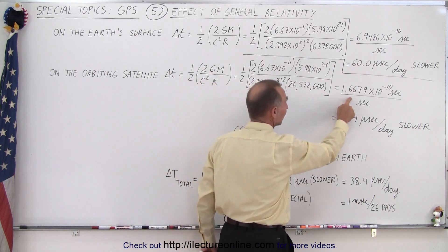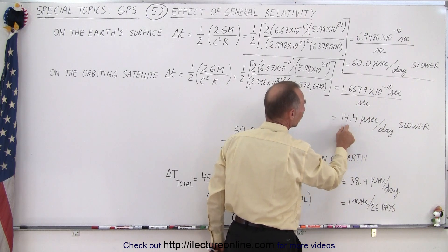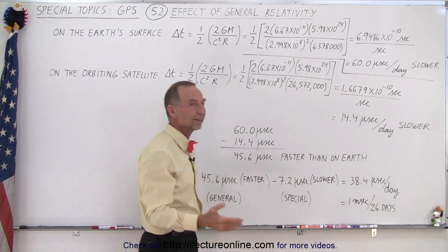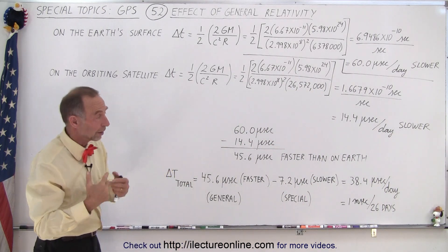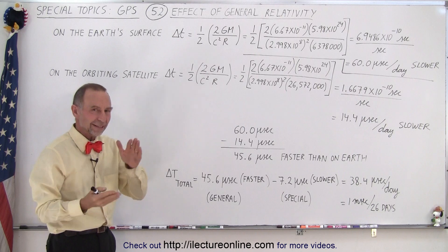And now we get a time difference of 1.6679 times 10 to the minus 10 seconds per second or 14.4 microseconds per day slower. Notice that the time dilation due to the general relativity is less where the satellites are than on the Earth.